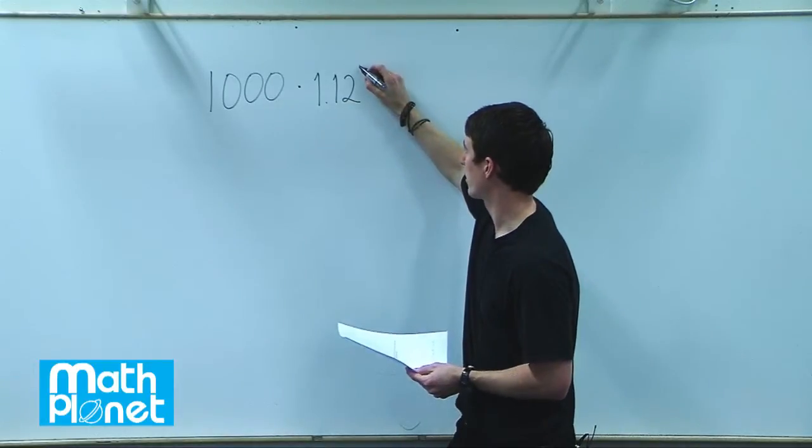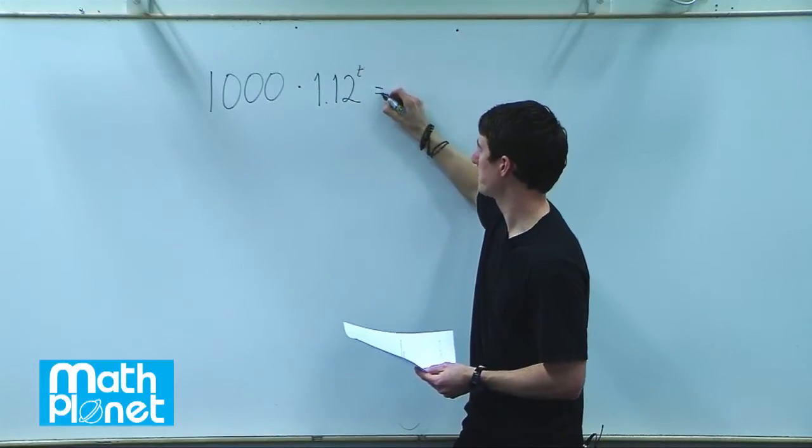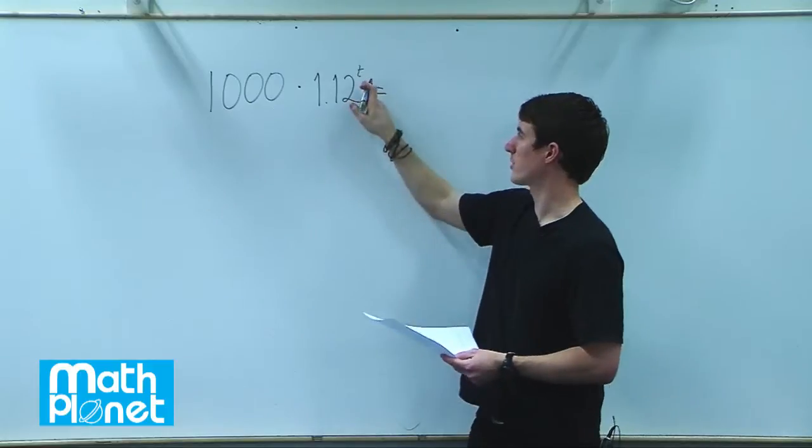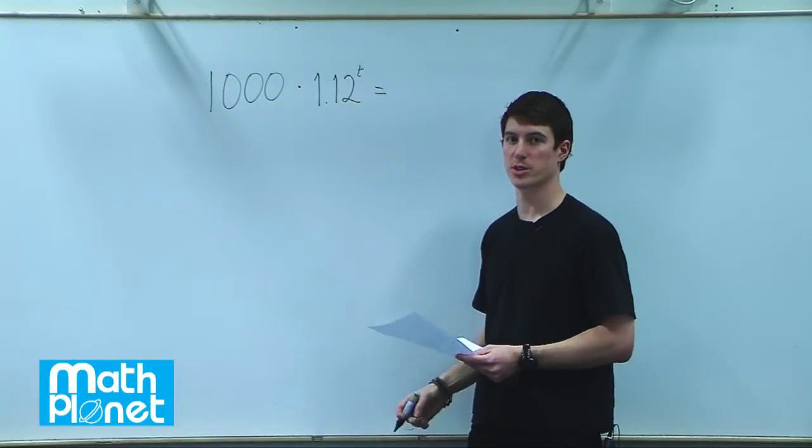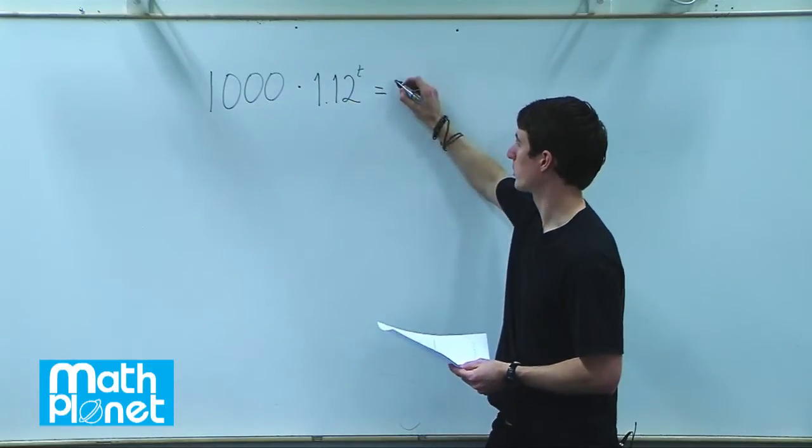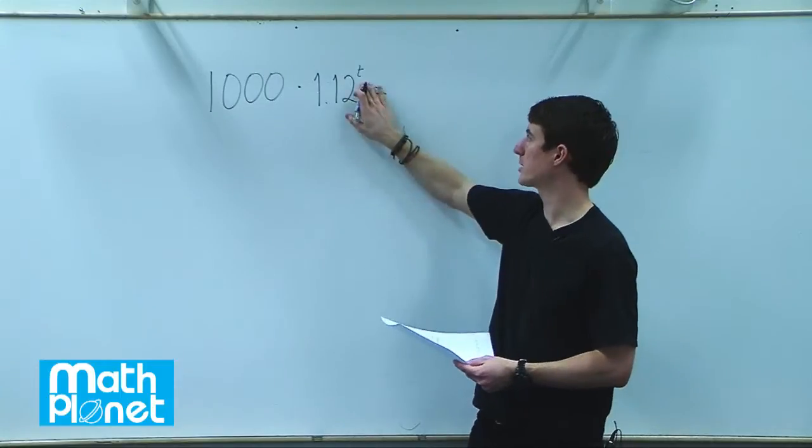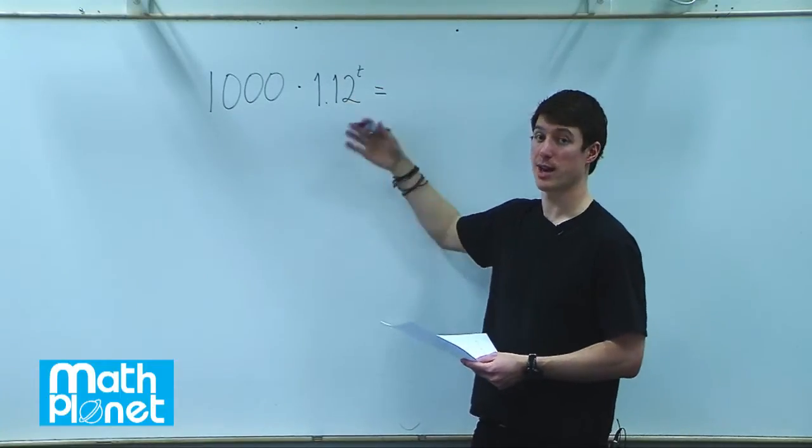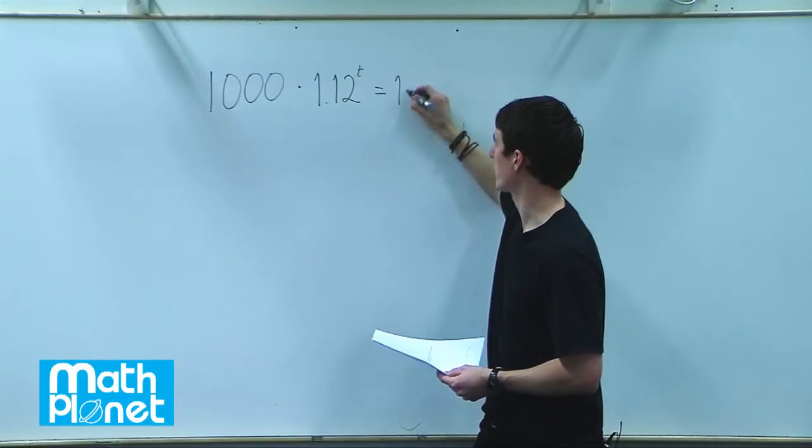So this is raised to the power of t, our variable, time. And this is in units of years because 12 is a percentage increase annually. And this is equal to whatever amount we want to see how long it takes for t in time to get to some amount. So we'll say $10,000.